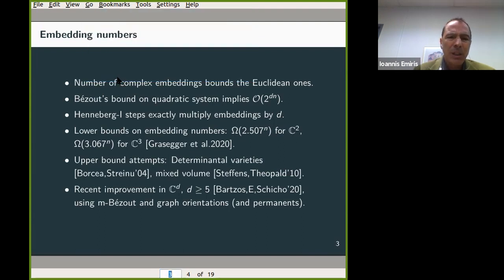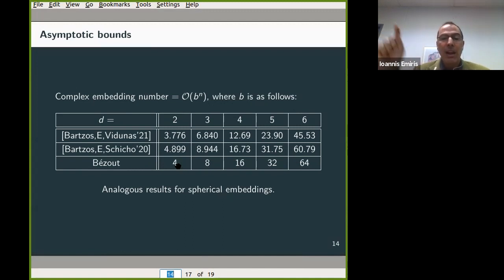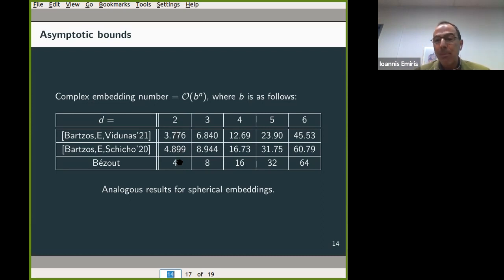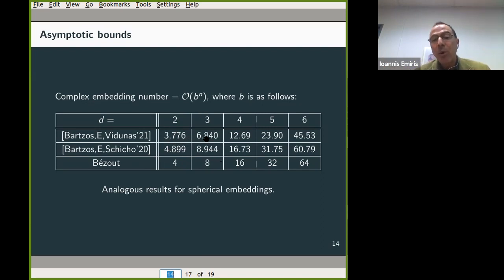Let me give a quick sneak preview of what we get. The Bézout bound is the last line, and the top line is the dimension. In the plane, Bézout gives us 4^n. This table shows the base raised to the nth power, where n is the number of vertices. For Laman graphs, 4^n was the upper bound from the Bézout bound, but in this paper I'm going to show how we can get about 3.776^n. The same technique applies to other dimensions: we get 6.84^n instead of 8^n for 3D space and similarly for higher dimensions.